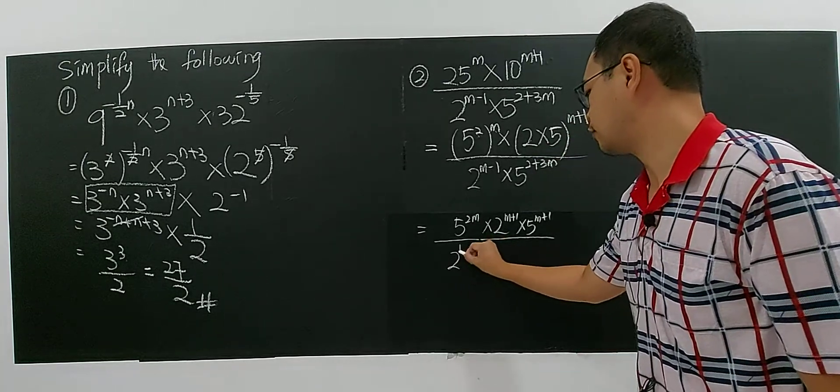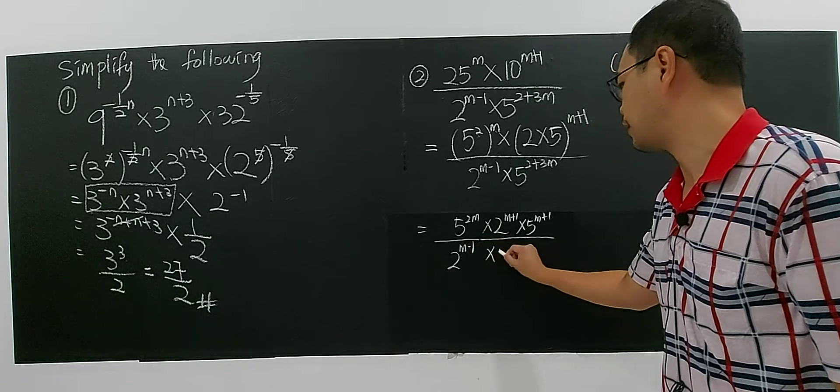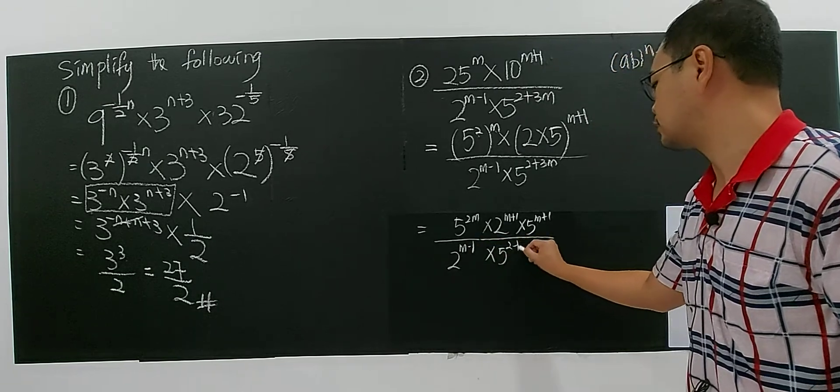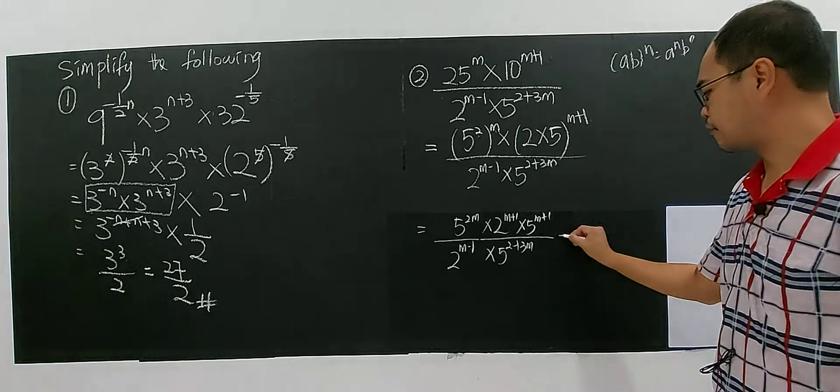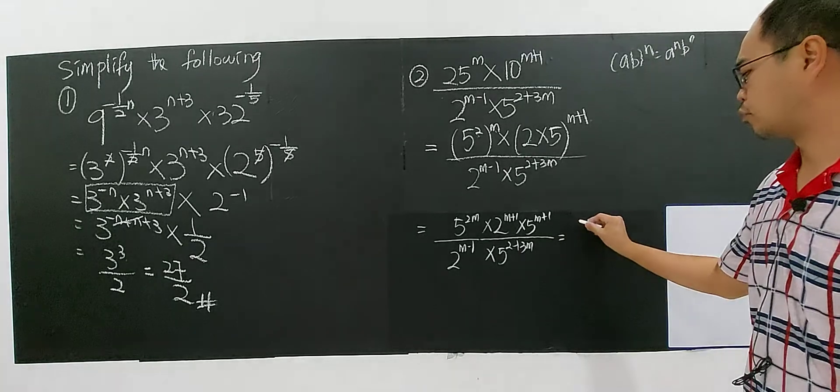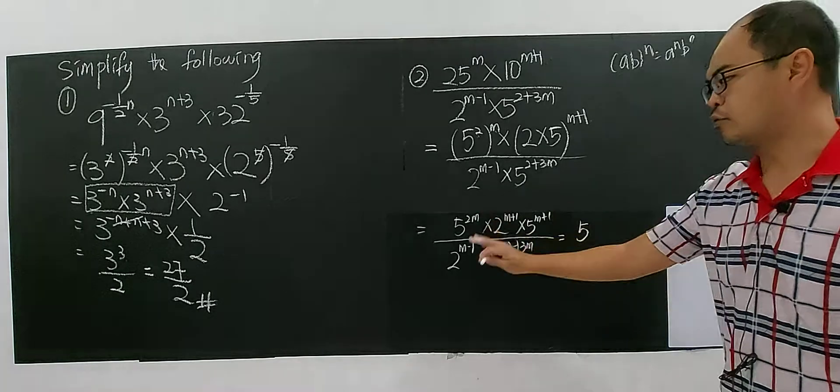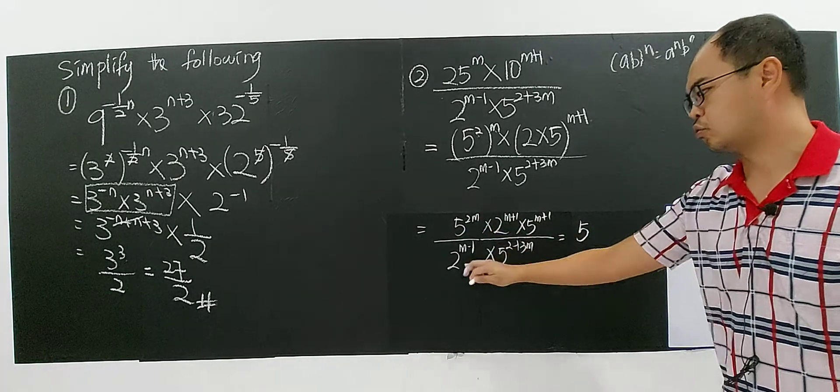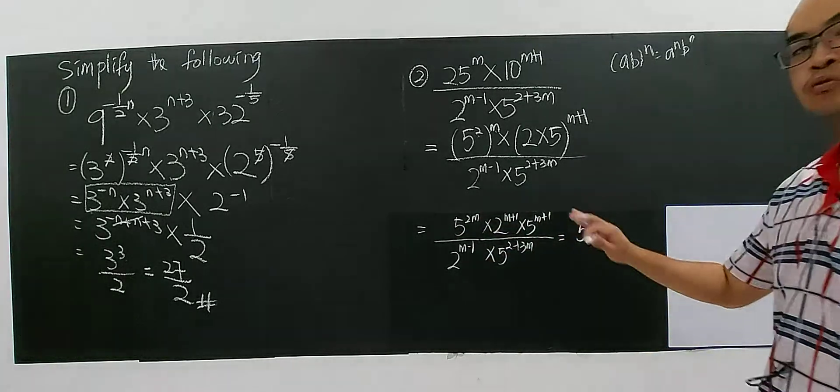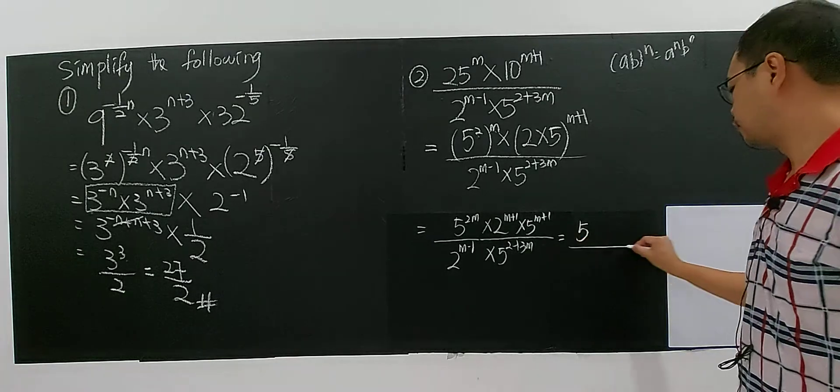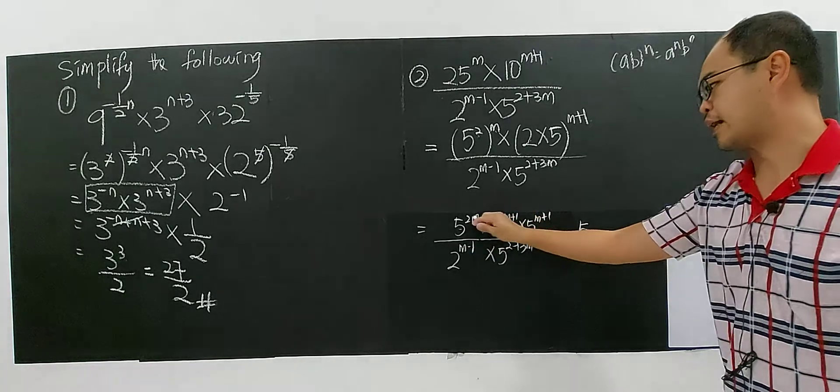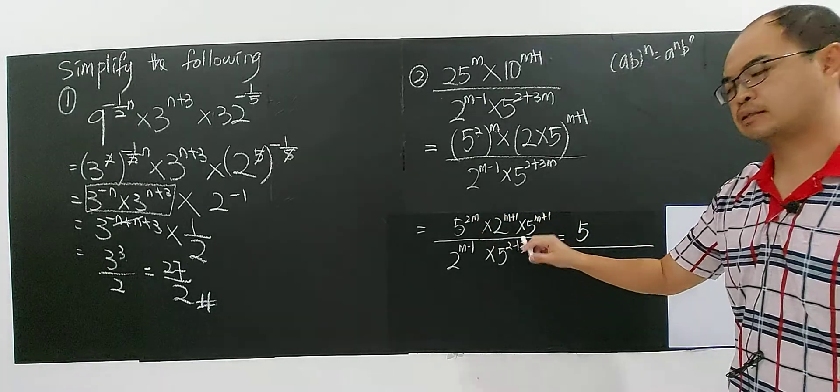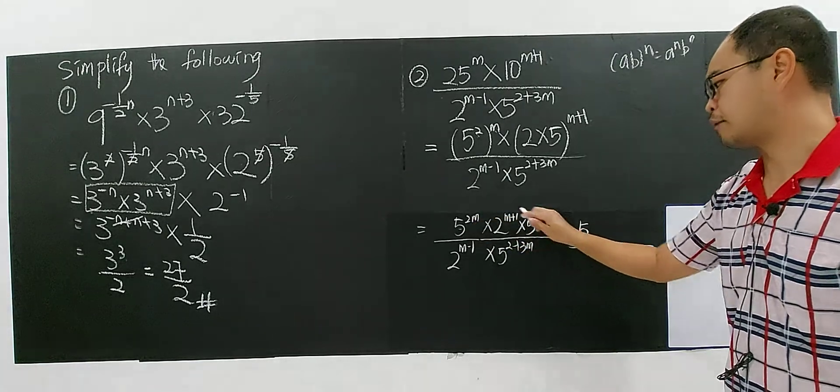2 to the power of M plus 1, 5 to the power of M plus 1. So and here you have 2 power of M minus 1. You rewrite back. 5 power of 2 plus 3M. Now it's the time for you to combine everything. So 5. Here you have only 5 and 2, 5 and 2. So I do it step by step. Where? On top I combine the 5 because they have the same base, so I can add up the index. Base are the same, you can add up the index.